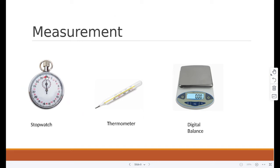This is a stopwatch. We can measure time by a stopwatch or a stop clock. Both give accurate results. The unit of time is seconds or minutes. This is a thermometer. We can measure temperature by thermometer or by a digital thermometer as well. The units are degree Celsius.